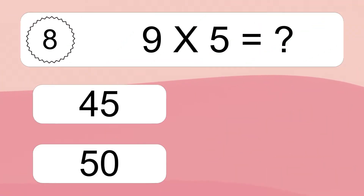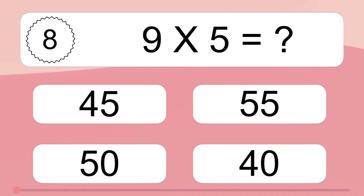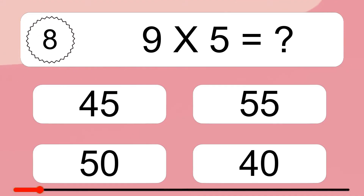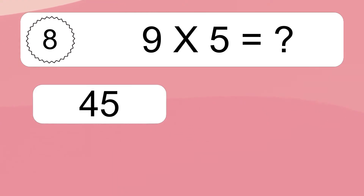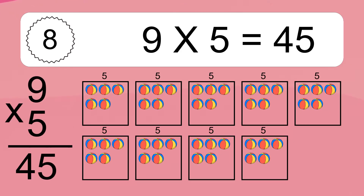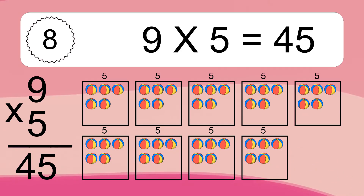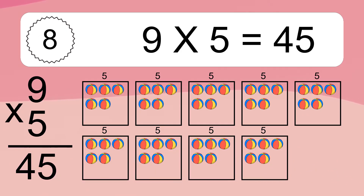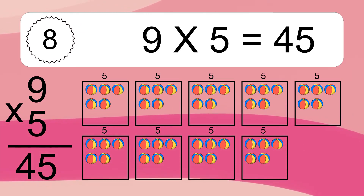9 times 5 equals what? 9 times 5 equals 45. We have 9 boxes, and each box has 5 colorful balls inside. If you count all the balls in all the boxes together, you will have 9 times 5 balls. This equals 45 balls.